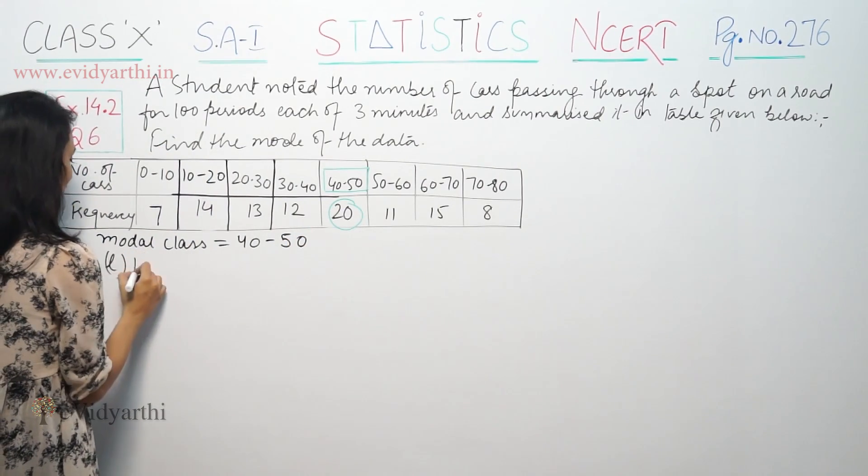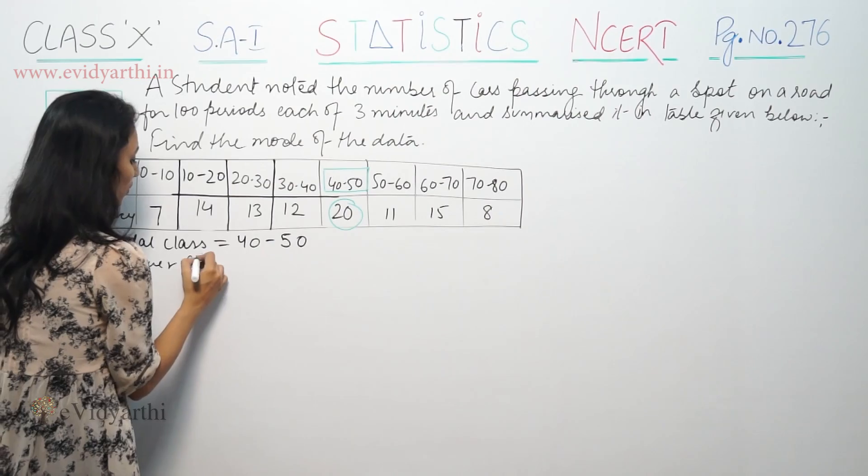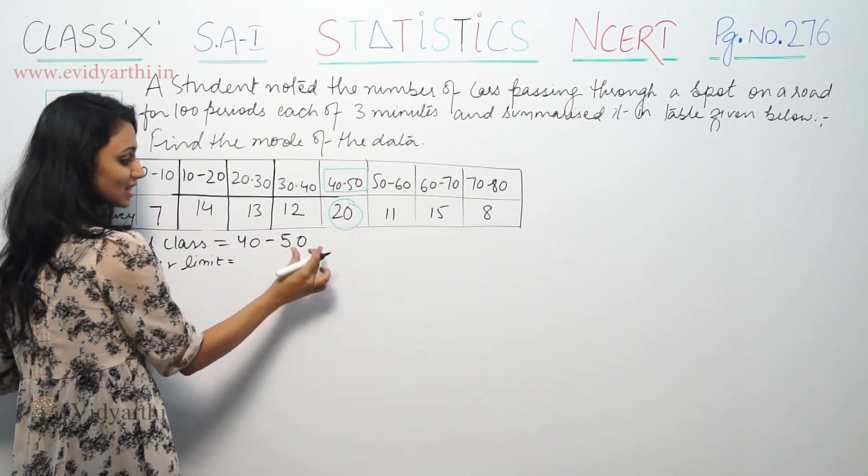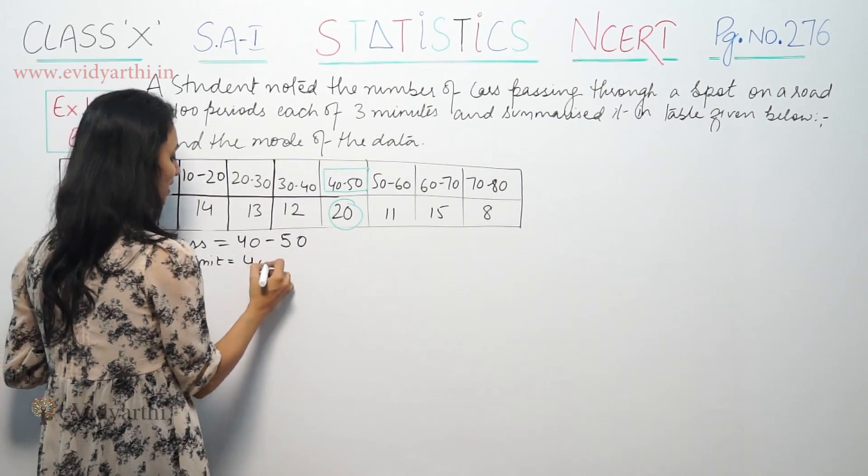The modal class is 40-50. Lower limit, now L. Lower limit of the class is 40. This is lower limit and this is upper limit. Lower limit is 40.